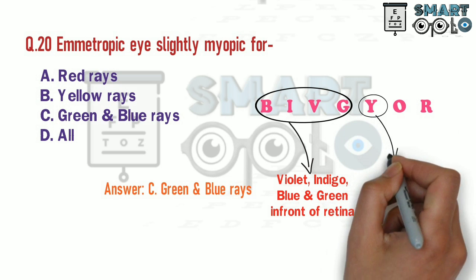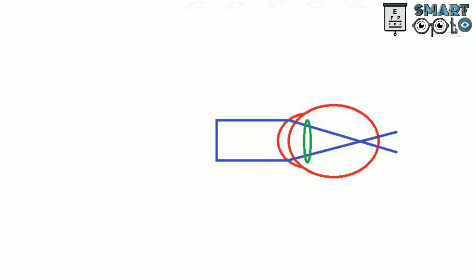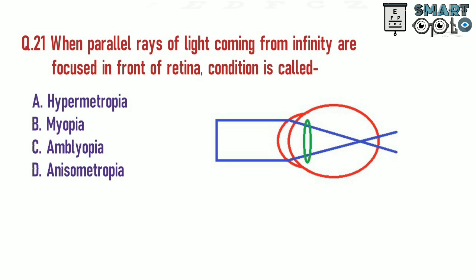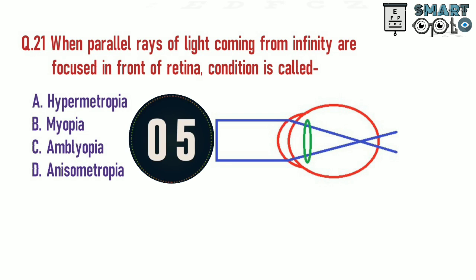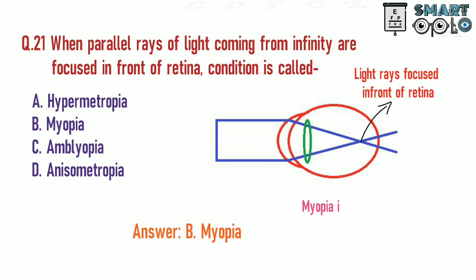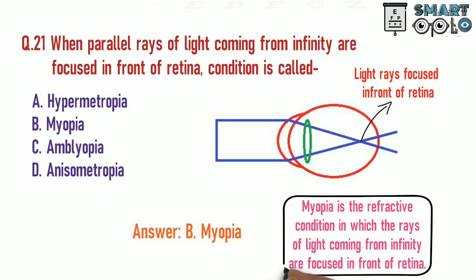The letter Y represents the yellow rays which are focused on the retina. Q21. When parallel rays of light coming from infinity are focused in front of the retina, the condition is called: A. Hypermetropia. B. Myopia. C. Amblyopia. D. Anisometropia. Myopia is the refractive condition in which rays of light coming from infinity are focused in front of the retina.